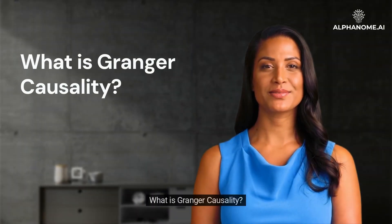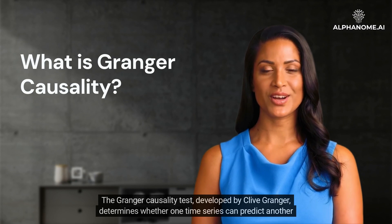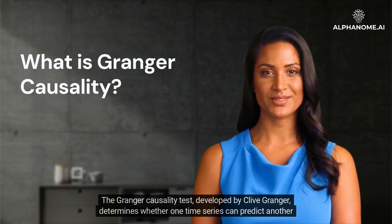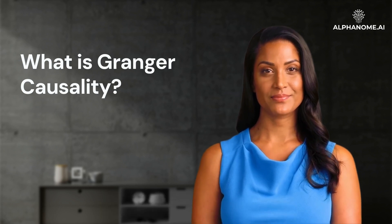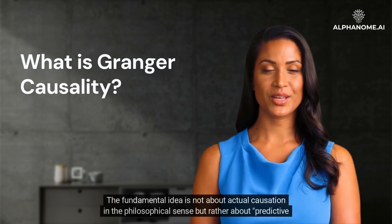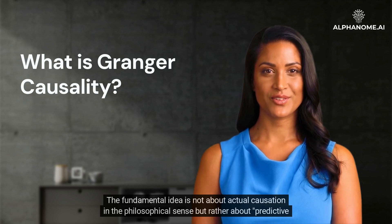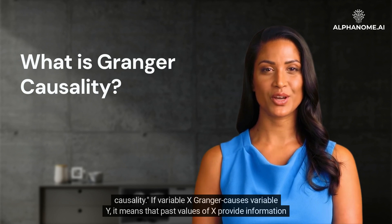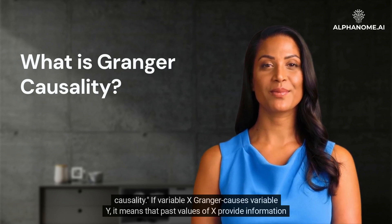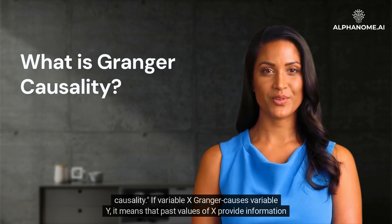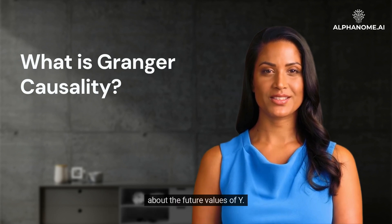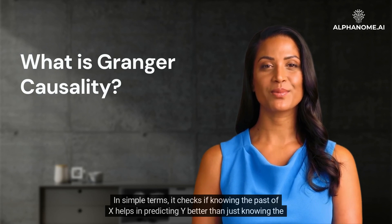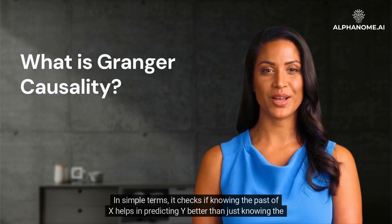What is Granger Causality? The Granger Causality test, developed by Clive Granger, determines whether one time series can predict another time series. The fundamental idea is not about actual causation in the philosophical sense, but rather about predictive causality. If variable X Granger-causes variable Y, it means that past values of X provide information about the future values of Y. In simple terms, it checks if knowing the past of X helps in predicting Y better than just knowing the past of Y alone.